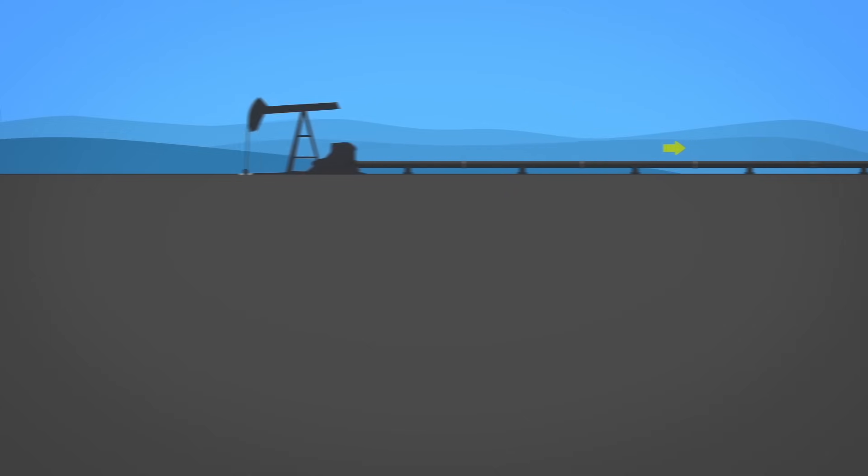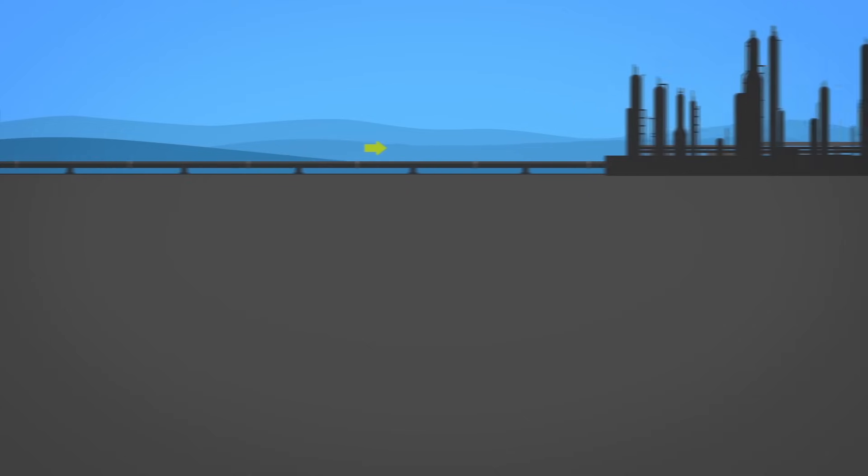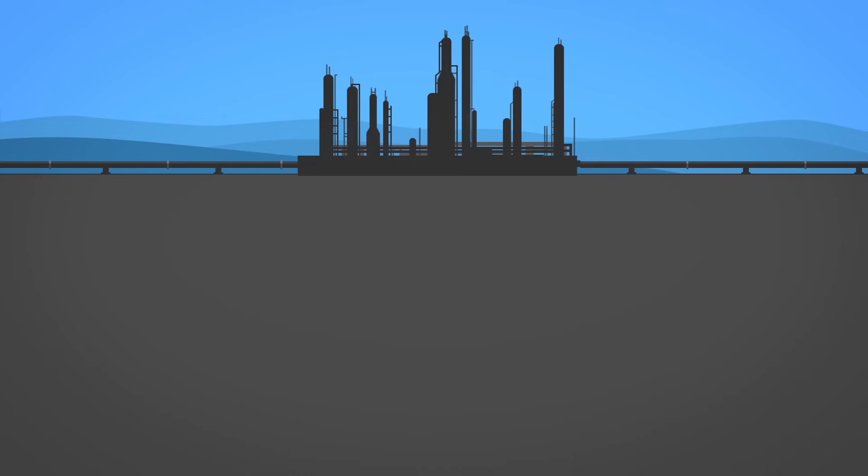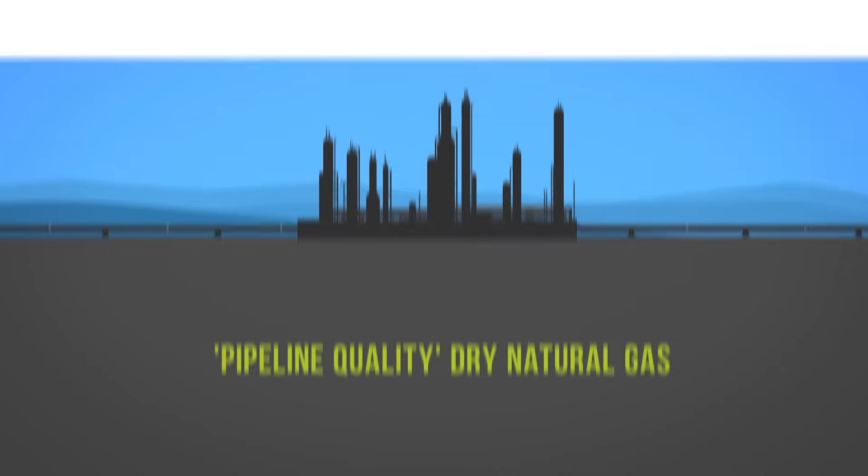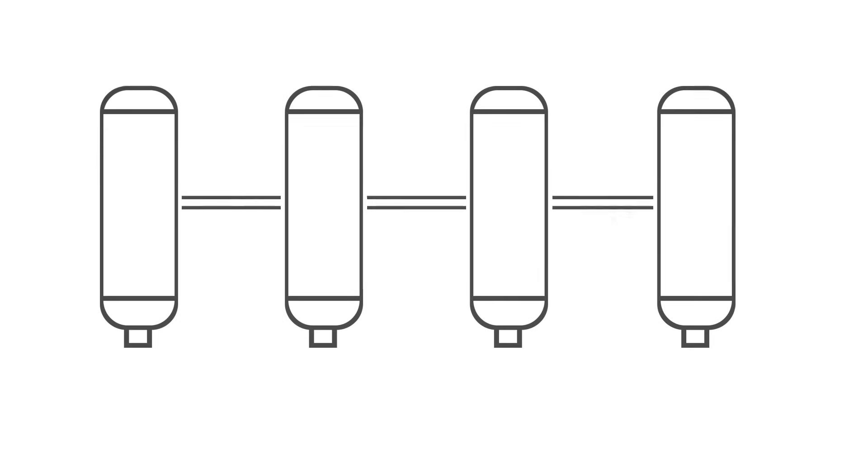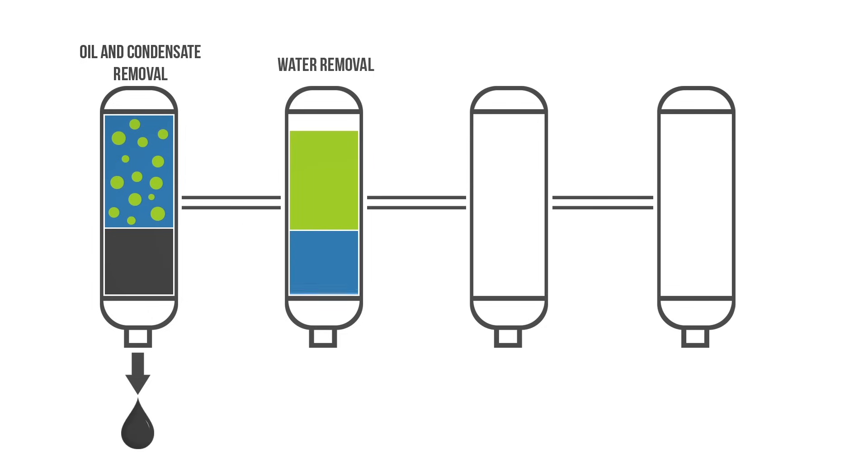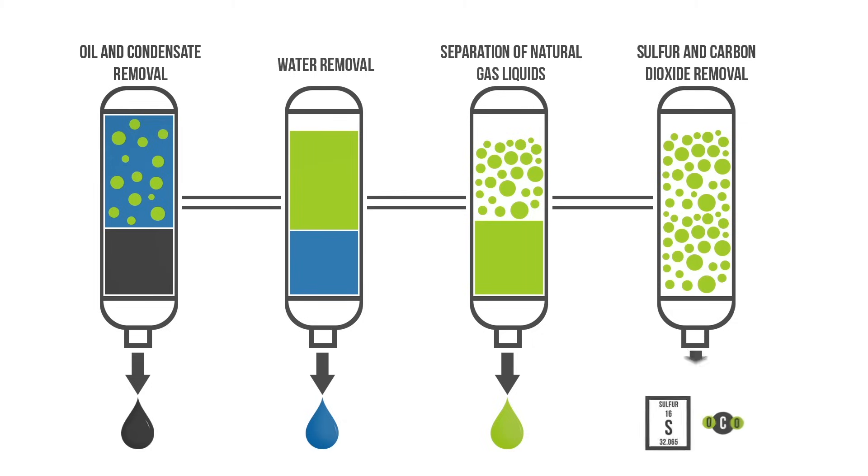Once extracted, natural gas is sent through small pipelines, called gathering lines, to processing plants, which separate the various hydrocarbons and fluids from the pure natural gas to produce what is known as pipeline quality dry natural gas before it can be transported. Processing involves four main steps to remove the various impurities: oil and condensate removal, water removal, separation of natural gas liquids, sulfur and carbon dioxide removal.